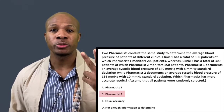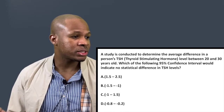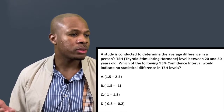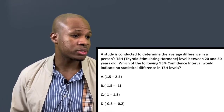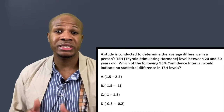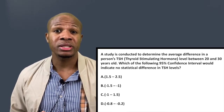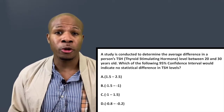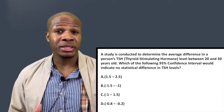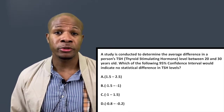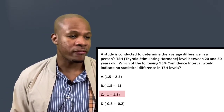Question number two: A study is conducted to determine the average difference in a person's TSH level between 20 and 30 years old. Which of the following 95% confidence intervals would indicate no statistical difference in TSH levels? When looking at differences, statistical difference is indicated by an interval where zero is NOT within the interval, because zero difference means the levels do not change. The only interval that contains zero is answer choice C: negative 1 to 1.5.